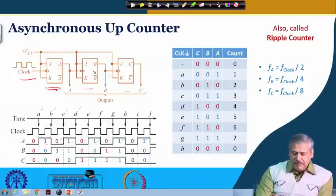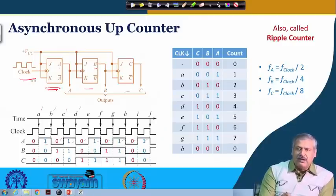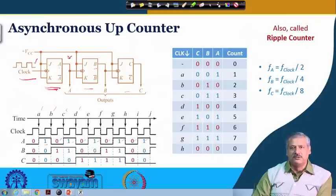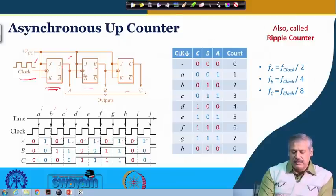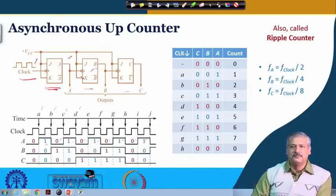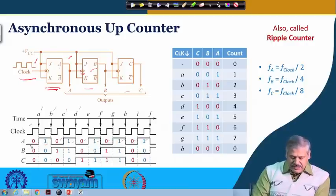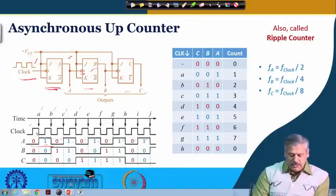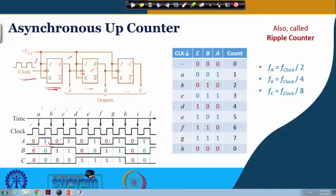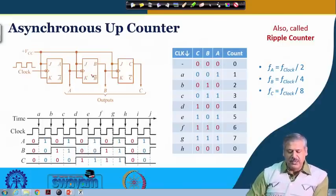Flip-flop B gets its triggering through A, not directly from the clock. The uncompleted output A is connected as the clock to flip-flop B. Whenever A changes from high to low, that serves as a clock for B. For every 2 changes in the clock, A changes by 1 — there are 2 clock negative edges for every 1 negative edge of A. So for every 2 clock triggers you get 1 trigger for flip-flop B.